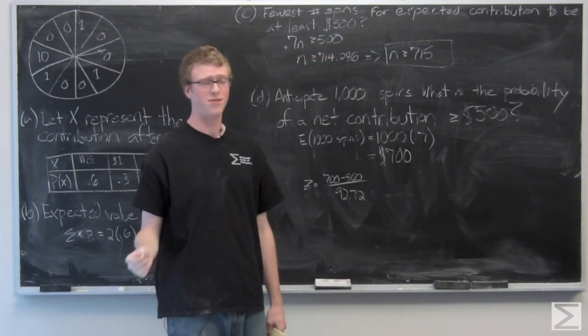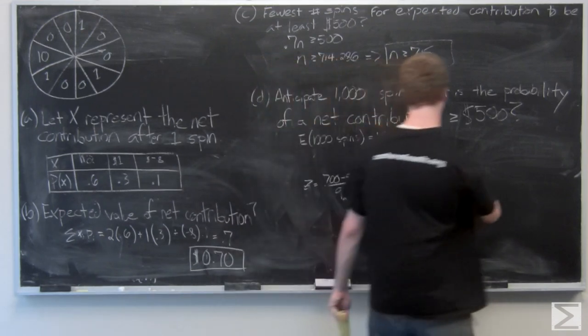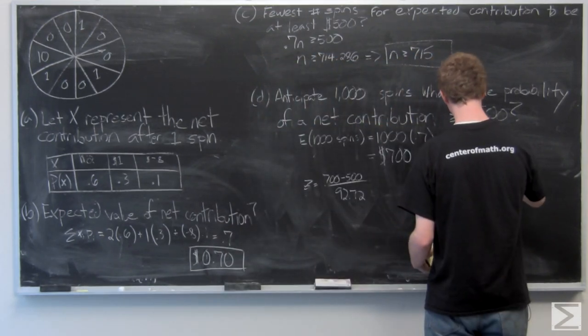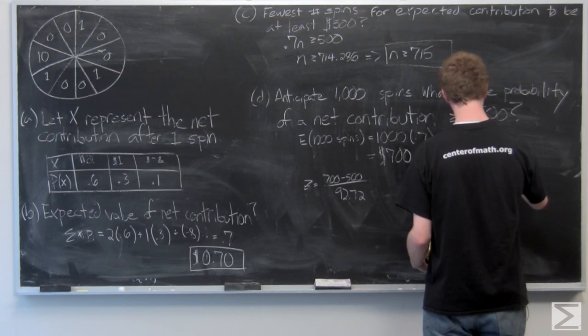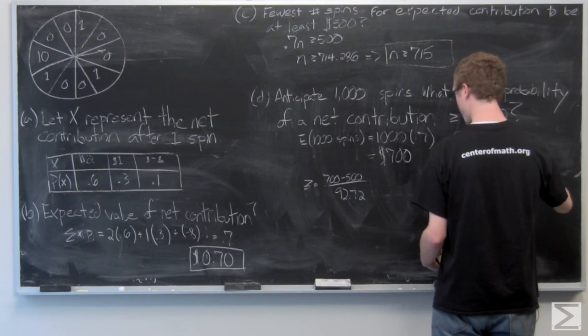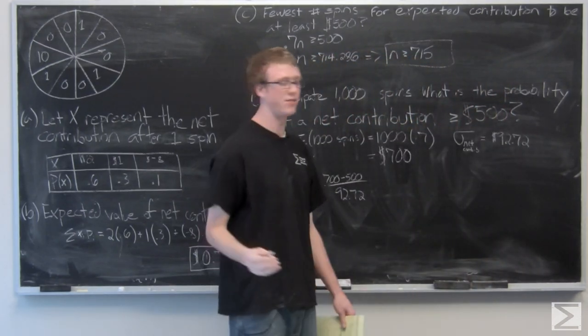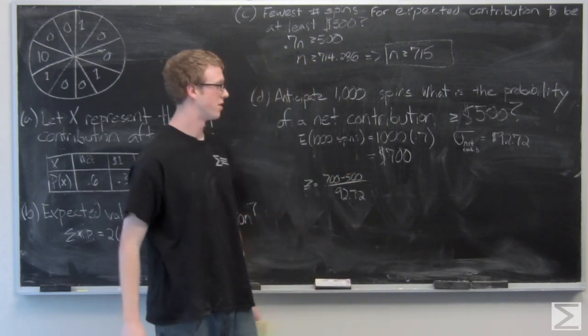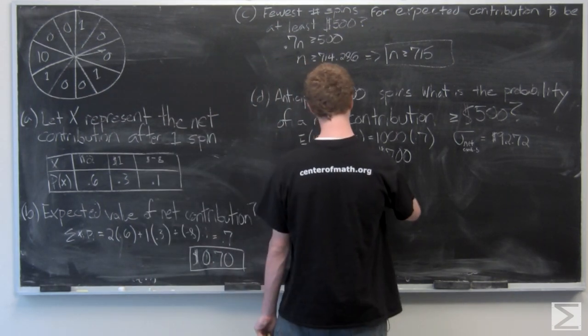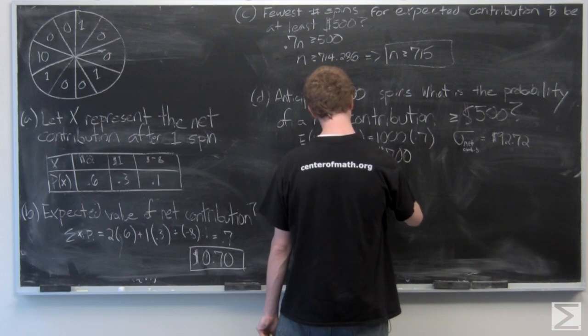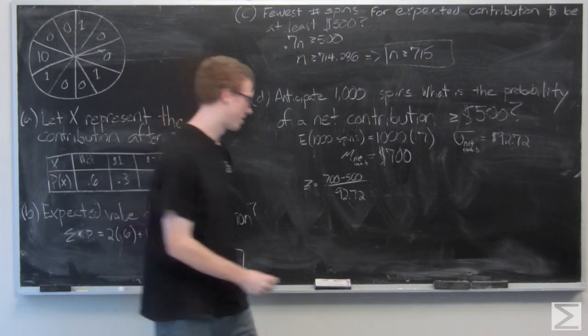This part of the problem actually also gives us the standard deviation value, which I forgot to write down here. I'm just going to put it off to the side right now. And this is the standard deviation of the net contribution of 1000 spins, and then the mean is just that expected value that we calculated originally. Now we can finish up the z-score.